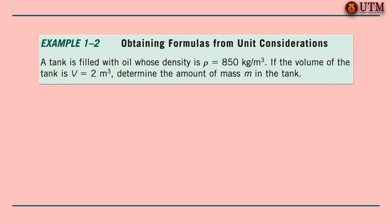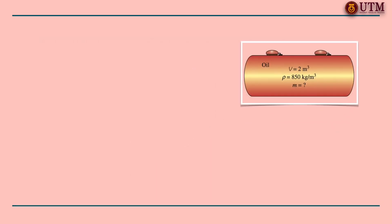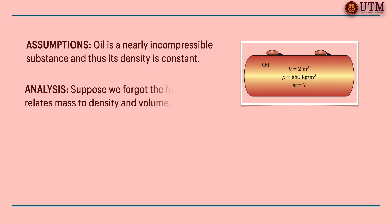Units can be used to our advantage. They can be used to check formulas, sometimes they can even be used to derive formulas, as explained in the following example. A sketch of the system is shown here. The volume of an oil tank is given, the mass of oil is to be determined. For simplification, let us assume that oil is a nearly incompressible substance and thus its density is constant.